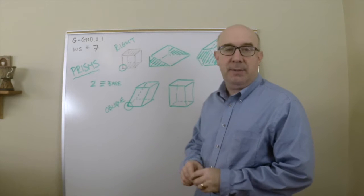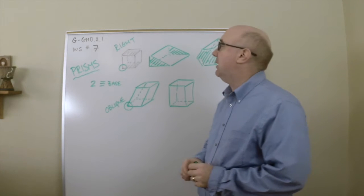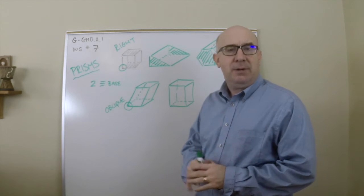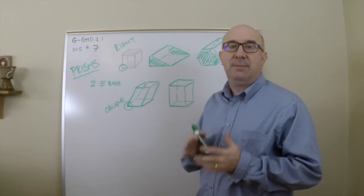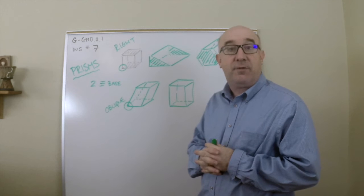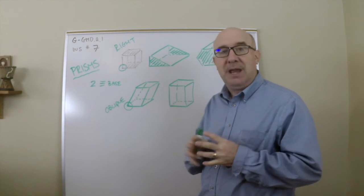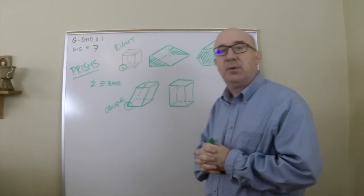All right, let's take a look at GGMD A1 worksheet number seven, all things about prisms. This is about the development of the prism formula as well as understanding volume. This is one of the topics specifically stated in the objectives, so it has a greater focus than others.